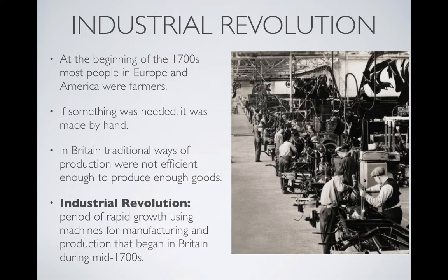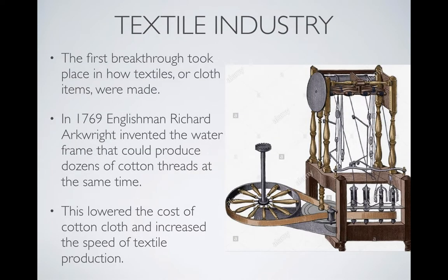Some historians today don't like the term Industrial Revolution because they think the word 'revolution' connotes that it happened all of a sudden — that at one point we had no factories and then all of a sudden we had factories — when in reality it was a slow process. Many historians prefer the word 'industrialization,' but we'll use Industrial Revolution since most people still use the term. Importantly, it began in the mid-1700s in Great Britain, about 50 to 60 years before the United States, and the first breakthrough took place in the textiles industry in 1769.